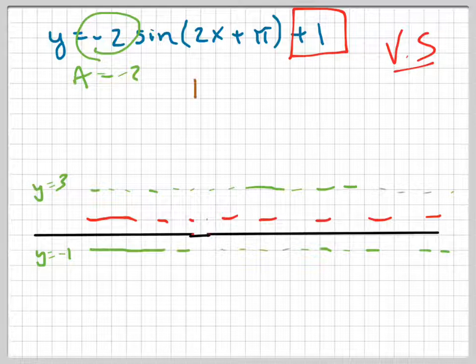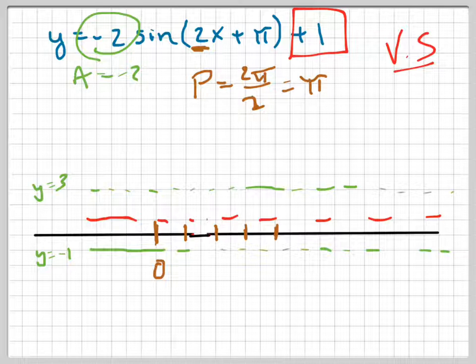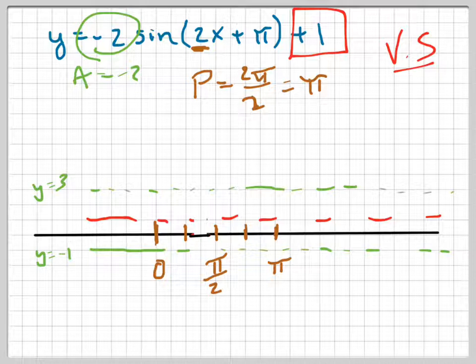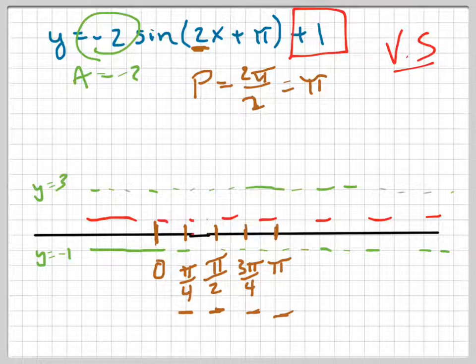Now let's do the period. The period is related to b, and it's 2 pi over b — so 2 pi over 2, which is just pi. It's going to go from 0 to pi. Halfway in between is pi over 2, a quarter of the way is pi over 4. That gives us 1 quarter, 2 quarters, 3 quarters, 4 quarters. You can watch the video about creating unit circle radians and angle measures if you want to understand how I did that.